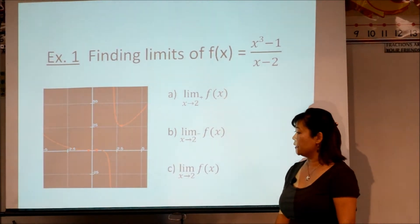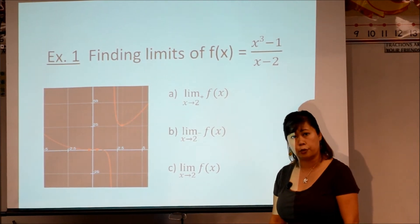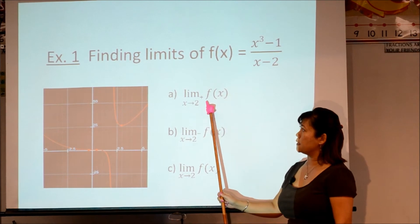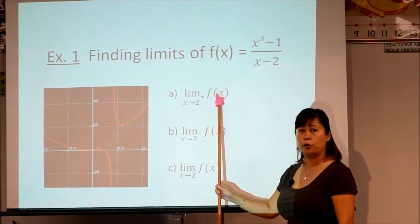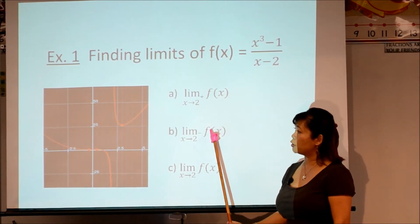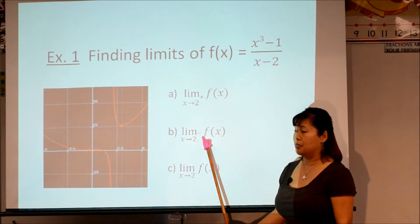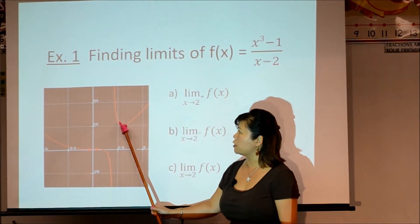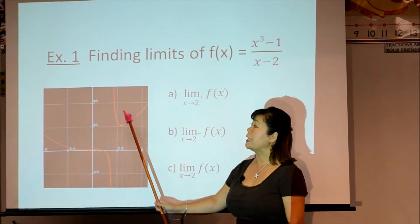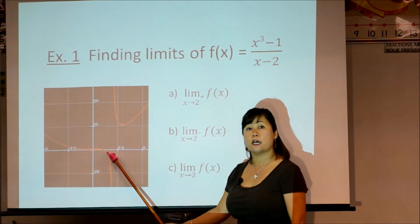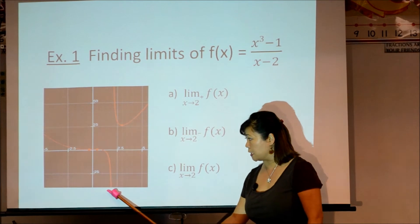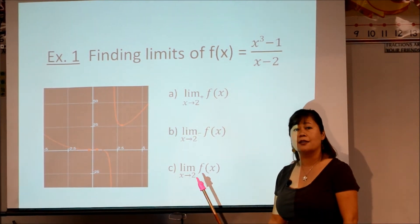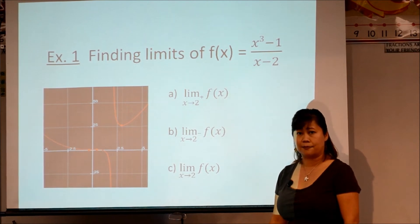What about the limit as X approaches 2 with no plus or minus? We compare the left-hand and right-hand Y values. The right-hand side gives positive infinity; the left-hand side gives negative infinity. Since they don't match, the limit as X approaches 2 does not exist.